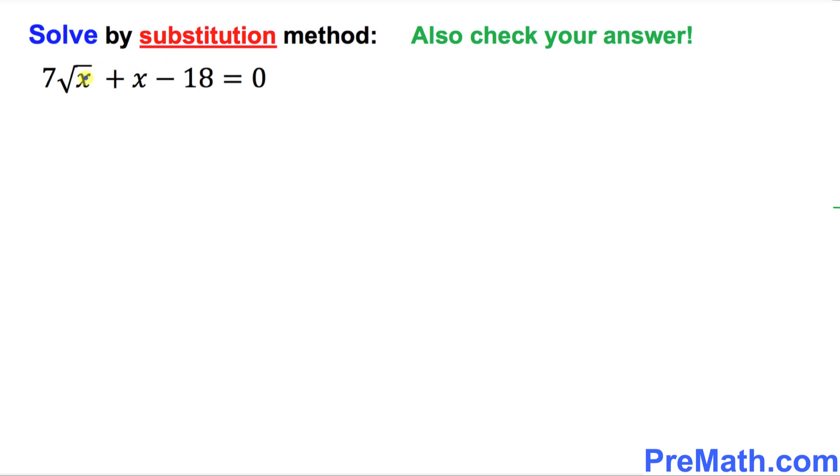Let's look at this radical equation. We're going to be using substitution method. So wherever you see this radical sign or square root of x, I'm going to make a substitution. I'm going to say let u equals to square root of x. So wherever you see square root, I'm just going to say it's u.